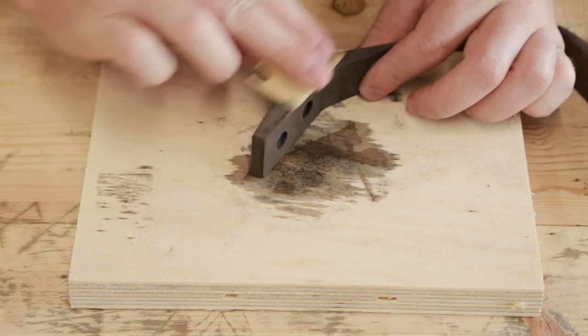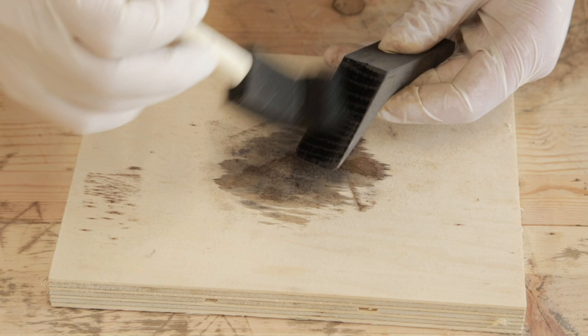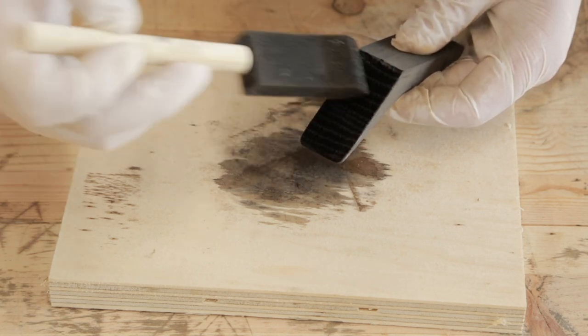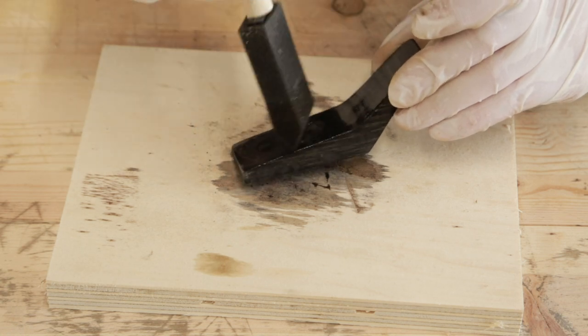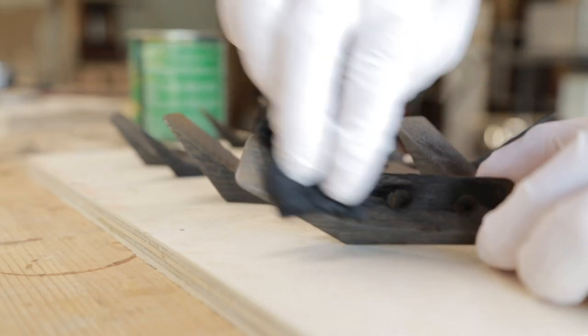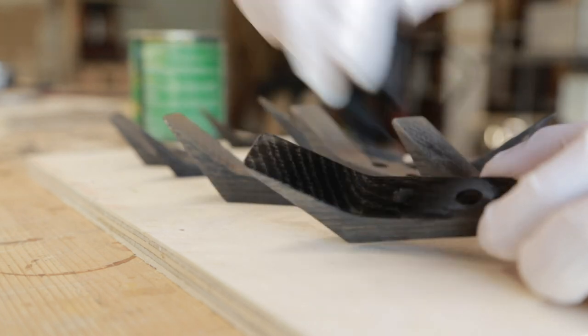In between each coat, I sanded to 320 grit. After the final coat, they kind of looked rusty brown, but once I put a coat of finish on them, it made them true black.